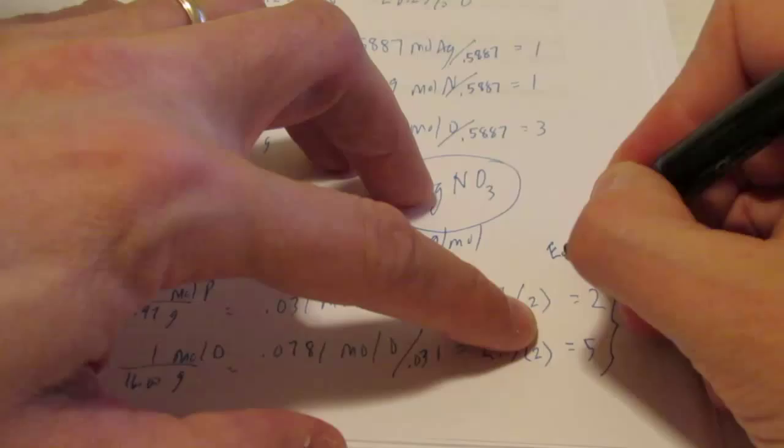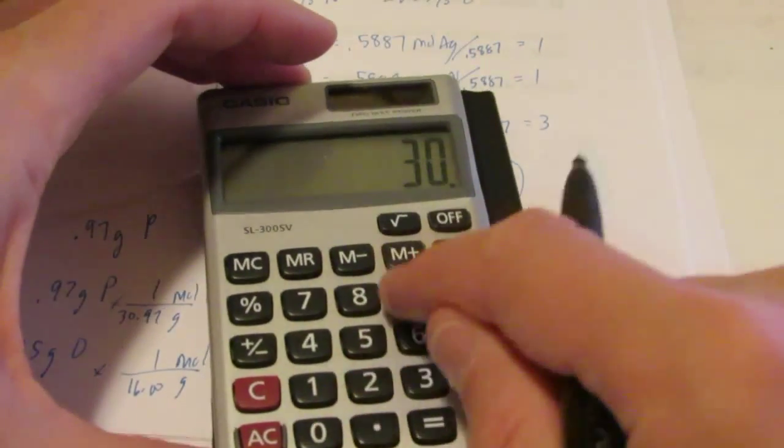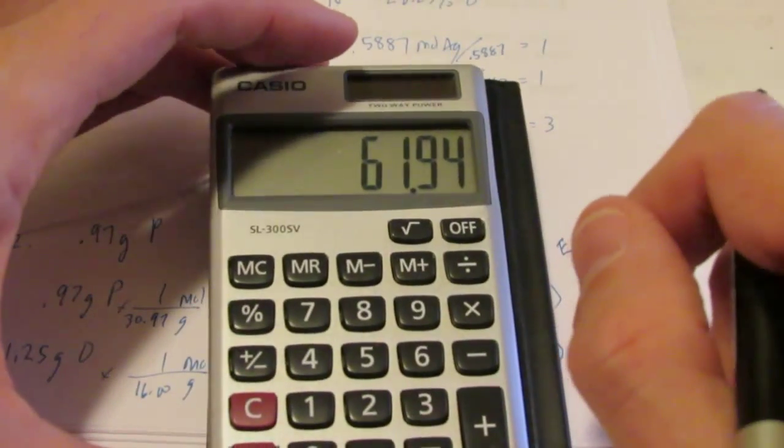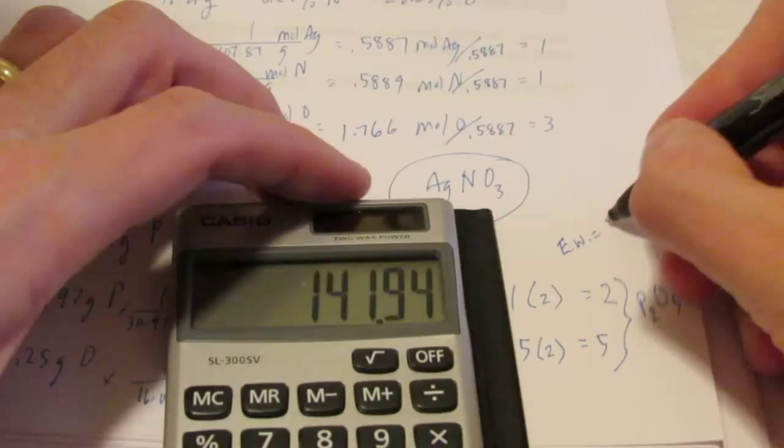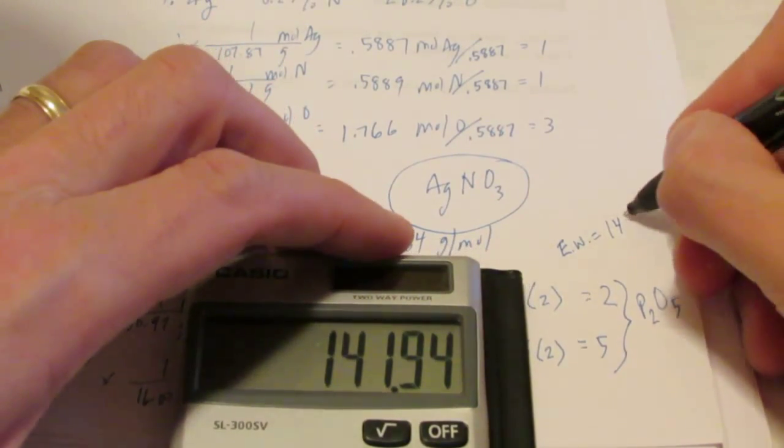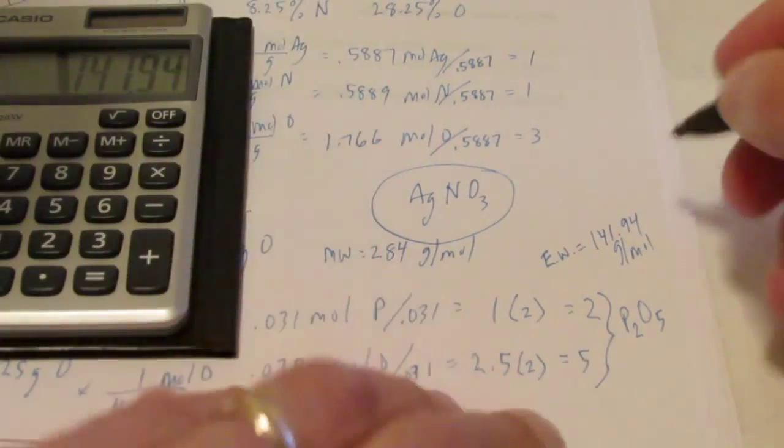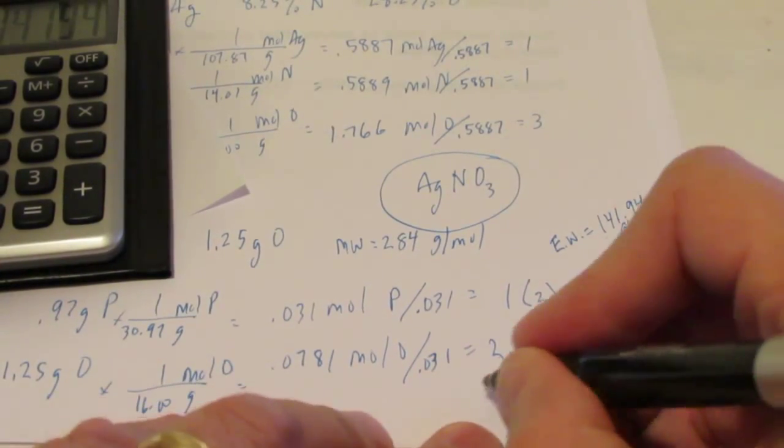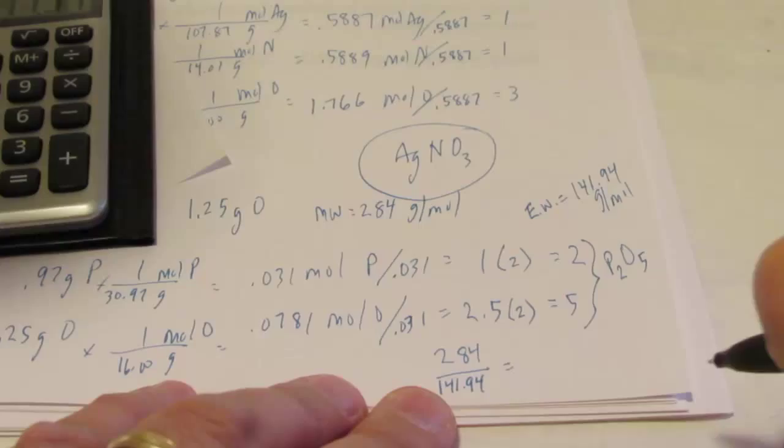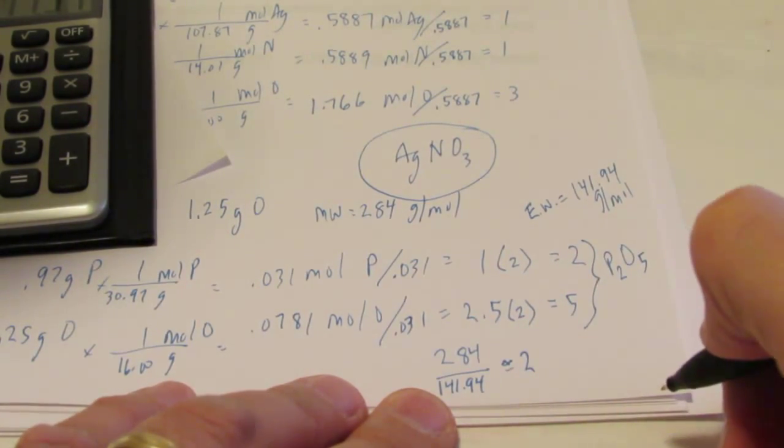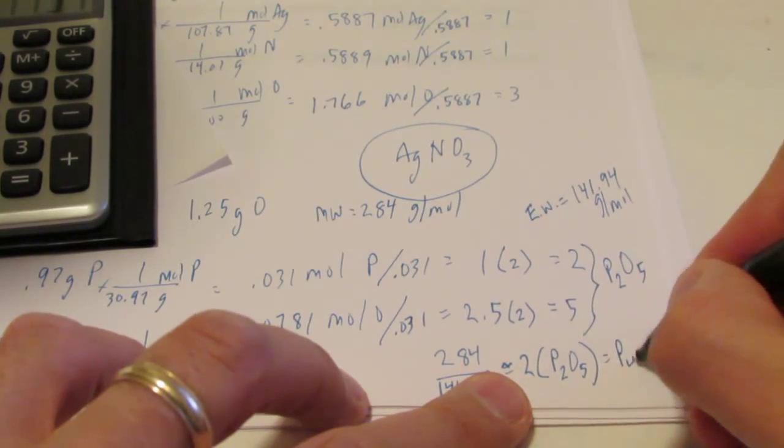Let's find the empirical weight. So it's going to be the weight of 2 phosphoruses, so we have 2 times 30.97, plus the weight of 5 oxygens. So that would be 5 times 16, so 80 grams per mole. And so the empirical weight is 141.94 grams per mole. Now I want the molecular formula. So the molecular weight is 284. So we have 284 divided by the empirical weight, 141.94. Can you guys do that without a calculator? Isn't that pretty close to 2? So that means my molecular formula is going to be 2 times P2O5, which is P4O10.